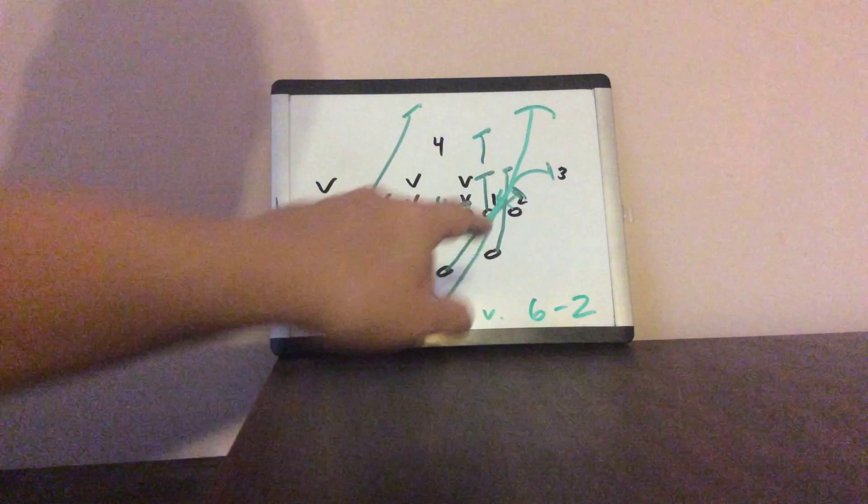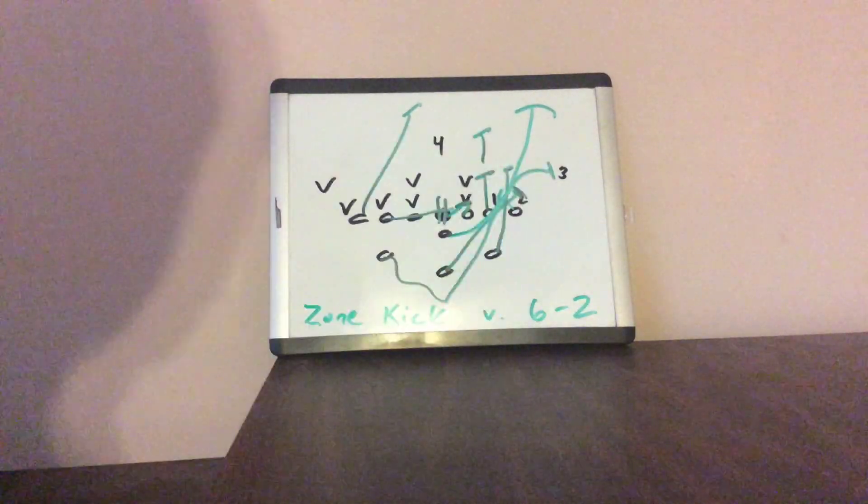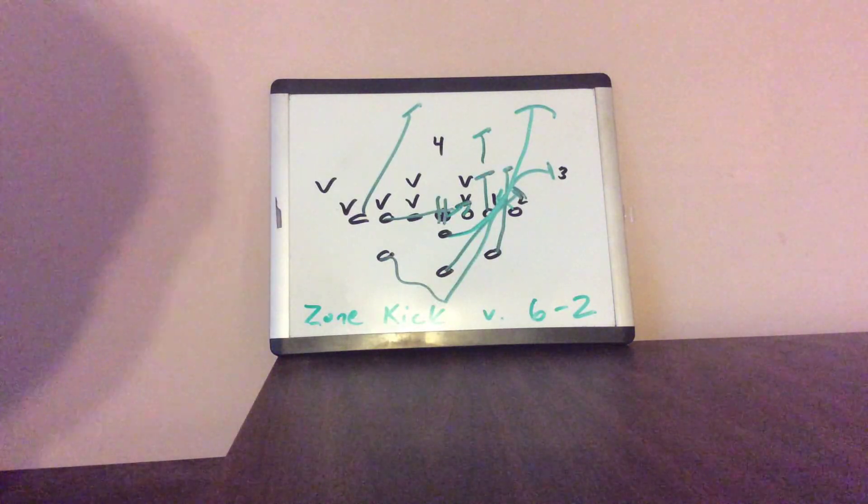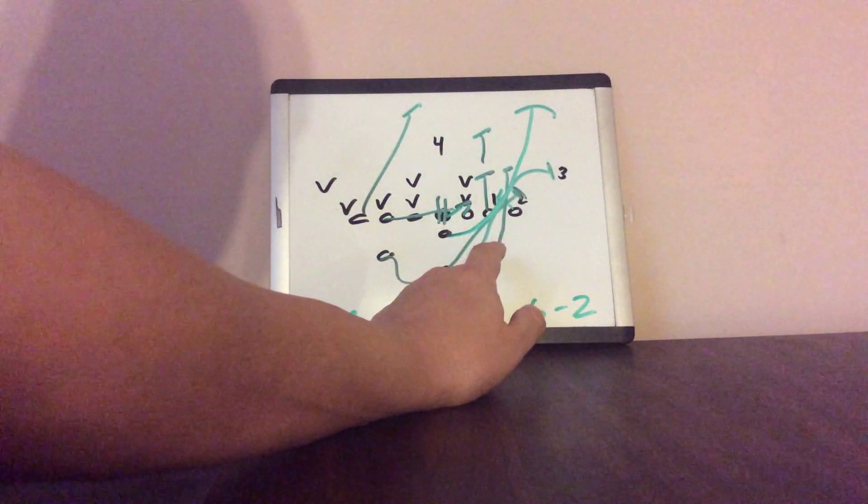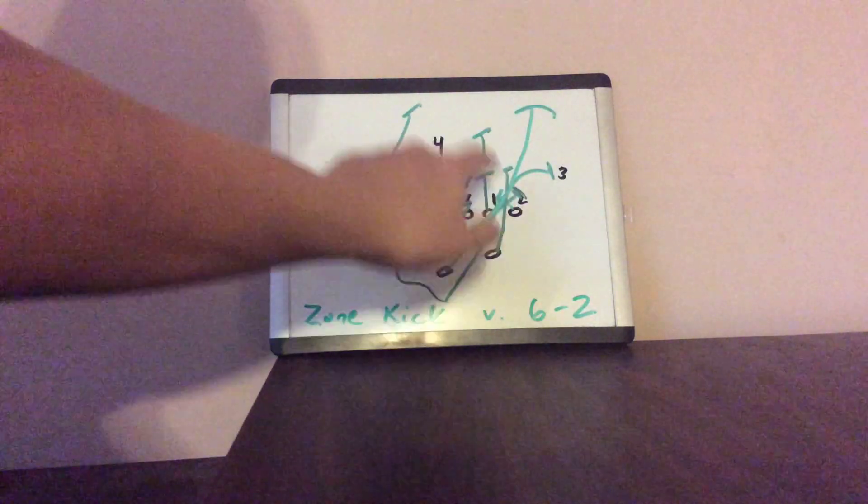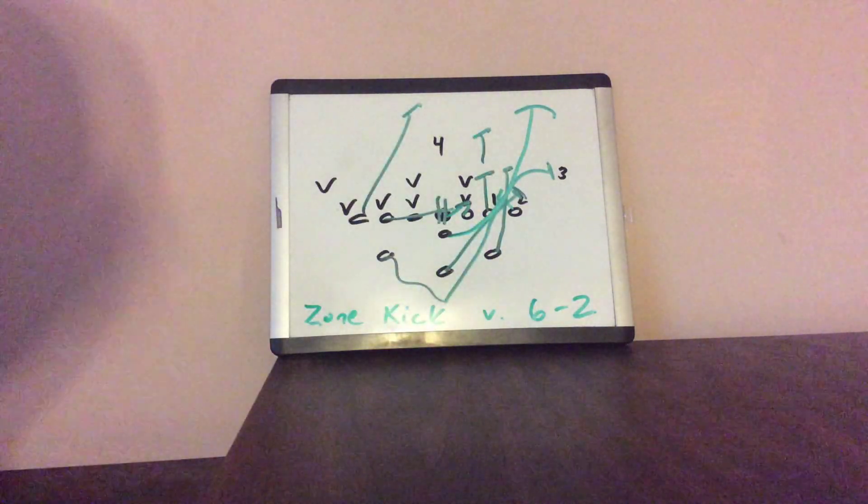from here on the kick. The receiver crushes number one. He's going to make sure he gets his inside knee through the crotch of number one. The playside A-back is going to load. He's going to block the mike to the free safety. So he'll block the mike to the free safety. Here he's going to block number